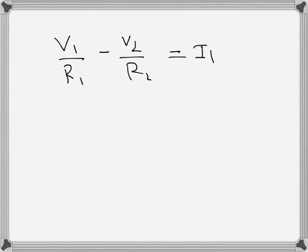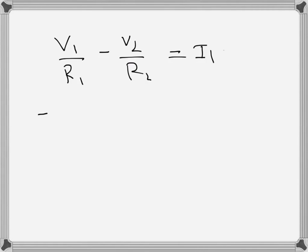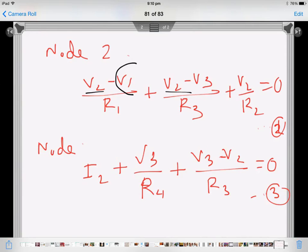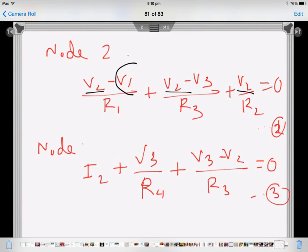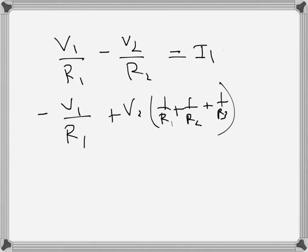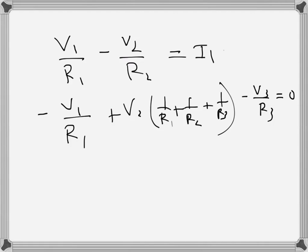For the second equation, I write V1 with a negative sign first, then V2 grouped as V2 times (1/R1 + 1/R2 + 1/R3), and finally V3 with a negative sign: negative V3 over R3. The right hand side is zero.